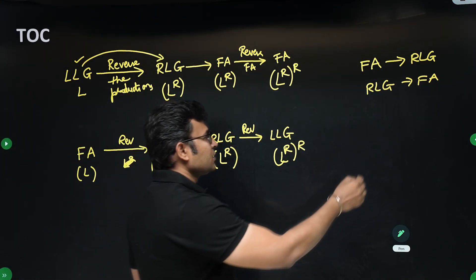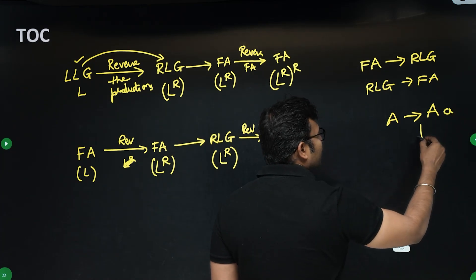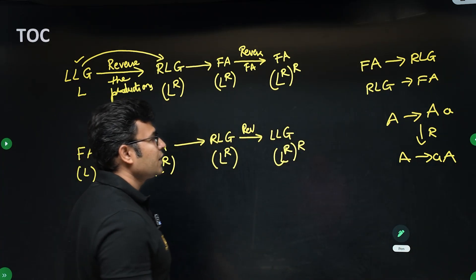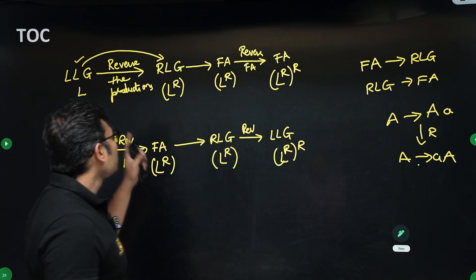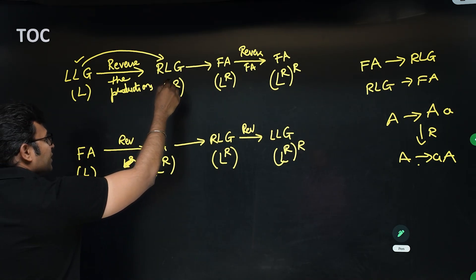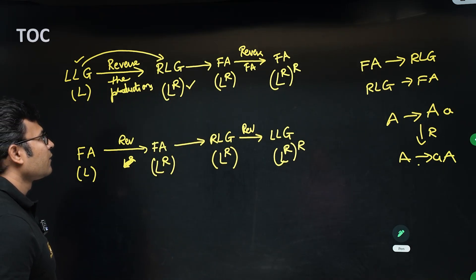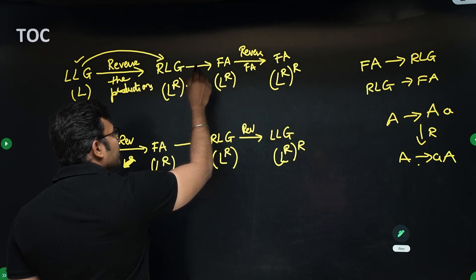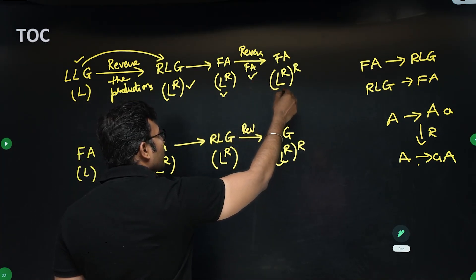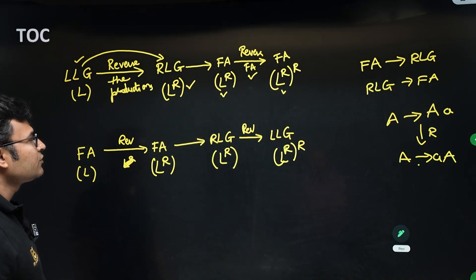If a left linear grammar is given and you need the finite automata, you first convert the left linear grammar to a right linear grammar by reversing the productions. For example, if a production is like Aa, reversing gives aA, yielding a right linear grammar. But reversing the productions also reverses the language — so the right linear grammar represents L reversed. You then convert it to a finite automata, which also represents L reversed, and then reverse the finite automata to get L.